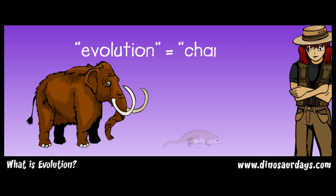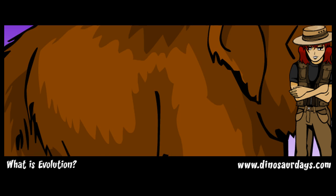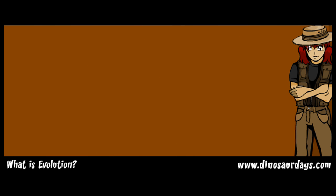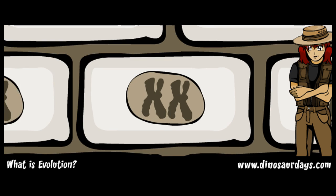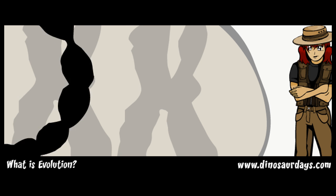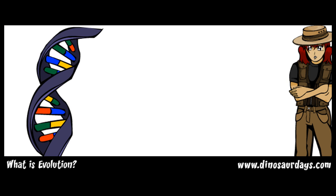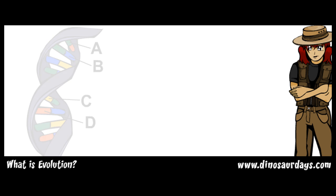Each animal is special and different from every other animal. Even two of the same kind of animal are different in some way. These differences happen because each animal has a special kind of code within its cells called genes. This code tells us how to grow and it makes every animal a little bit different from her brothers and sisters.